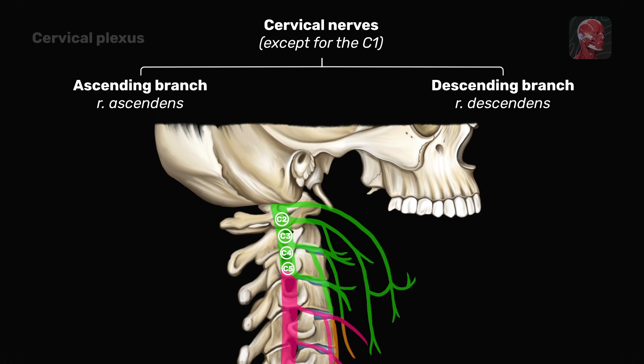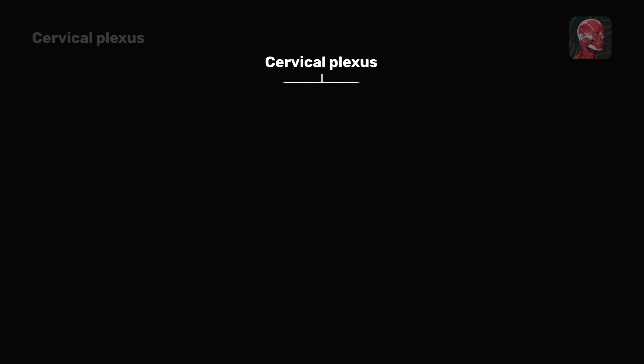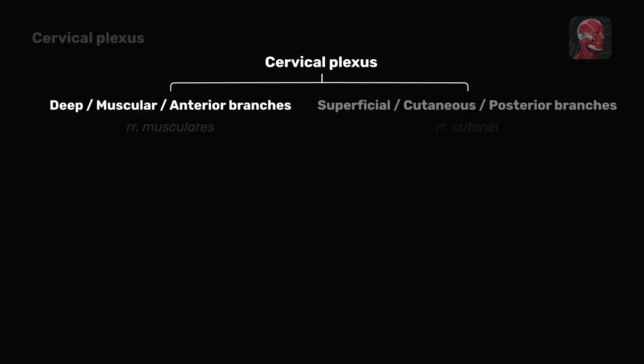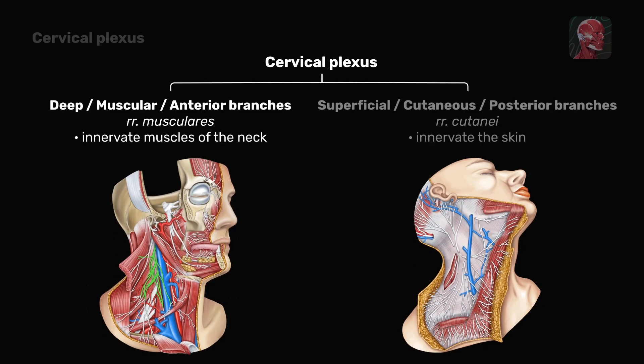The cervical plexus has two types of branches. Deep, or muscular, or anterior branches, which are motor branches that innervate muscles of the neck; and superficial, or cutaneous, or posterior branches, which are sensory branches that supply the skin.